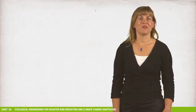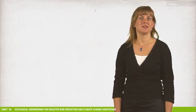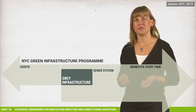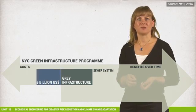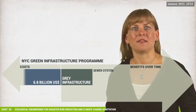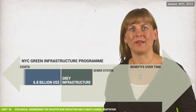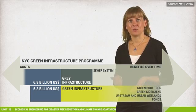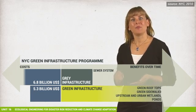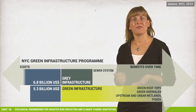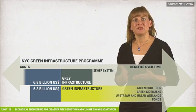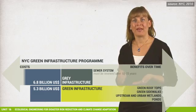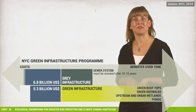Cost efficiency of hybrid solutions has been proven by various case studies. Take the example from New York City, where the grey infrastructure of the sewer system was in urgent need for upgrading with estimated costs of 6.8 billion US dollars. Instead, the city decided to invest in a green infrastructure plan which cost 5.3 billion. The plan includes green rooftops, green sidewalks, upstream and urban wetlands and ponds for cooling the city, aesthetics and for stormwater retention. In addition to its initial lower cost, over time the benefits of green infrastructure accrue while grey infrastructure requires renewed investment after 10 to 15 years.